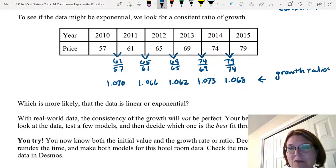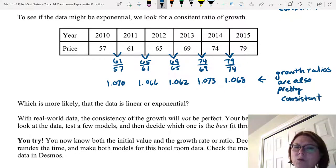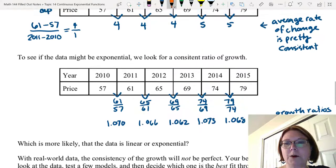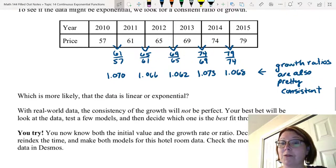And these growth ratios are also fairly consistent. So what's more likely, that the data is linear or that the data is exponential? In this case, it's really hard to say. With real world data, the consistency of growth is not going to be perfect. So your best bet is to look at the data, test a few models, and then decide which one is the best fit for the calculations. Or look at something in the real world that might give you a sense for what's more likely to be the case, linear or exponential growth. For this problem, let's go ahead and make both models.